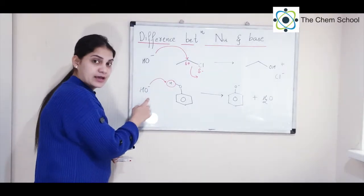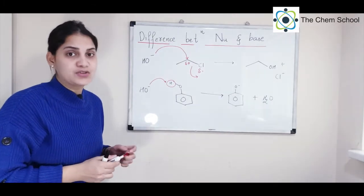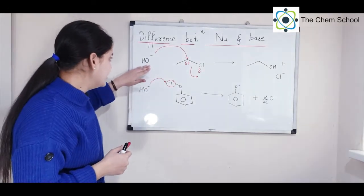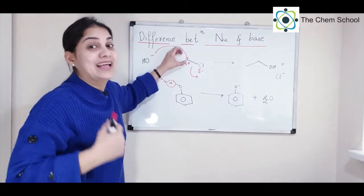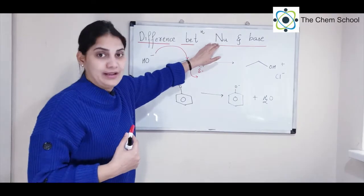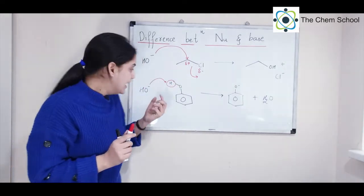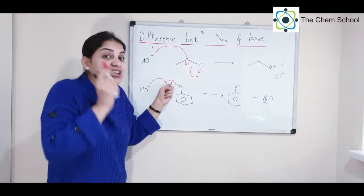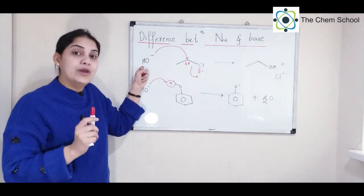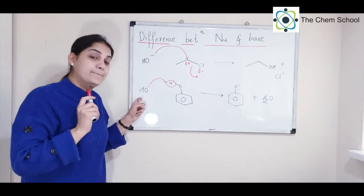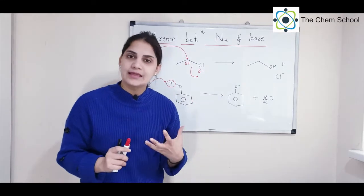So understand the difference: in organic chemistry, a nucleophile is something that is electron rich and attacks an electron-deficient carbon. Similarly, if something is electron rich and abstracts a proton — donating the electron to an electron-deficient hydrogen — then you call that a base. To repeat: a nucleophile will always attack an electrophilic carbon, while a base will always attack a proton to form water.